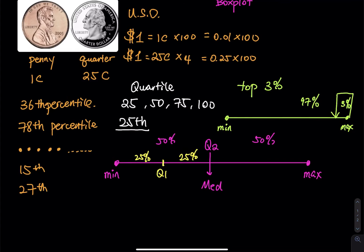Q1 stands for the first quartile — the first 25 percent of the data. From Q1 to Q2 is the second 25 percent, so together that is 50 percent, which is the median. Then in the upper half, make another cut — that is Q3. This divides the entire data set into four quartiles, just like dividing one dollar into four quarters of 25 cents each.